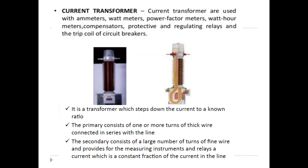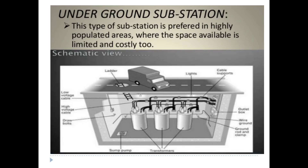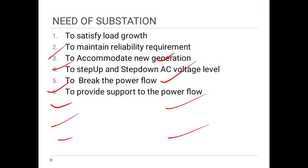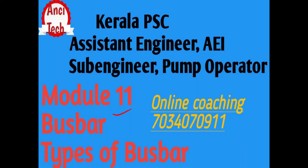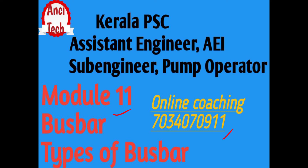This is how we study the substation — the important parts of the substation and the typical components of a power plant substation. We studied different types of substation. In the next class, we will study substation spacing, distance from buildings, materials used for 11 kV substation, preparation of the distribution substation, 4-pole module substation, and PE length module substation. If you have any questions, please contact us in the next class. Thank you.